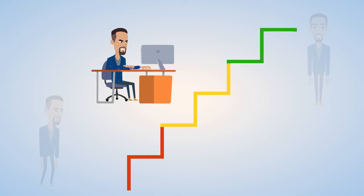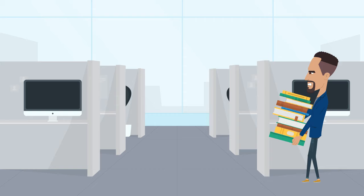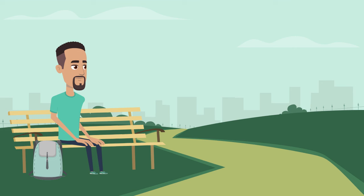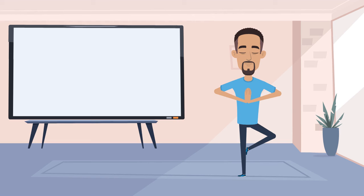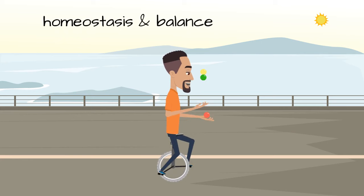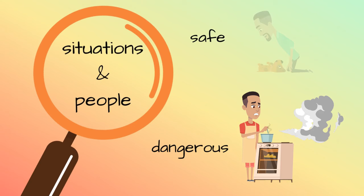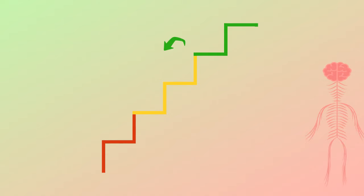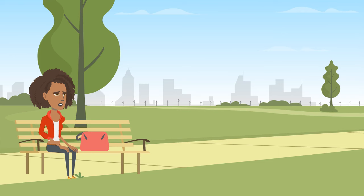Throughout the day we move between the different states, up and down the ladder, depending on what we are doing. When we are in a stressful situation and overwhelmed, we are likely to go into the dorsal vagal state. When we are calm and feel safe, we go up the ladder into our ventral vagal state. Our nervous system has an inherent tendency towards homeostasis and balance, so the state we are in helps us navigate and cope with whatever we are going through. We involuntarily scan situations and people to determine if they are safe or dangerous, and we move up or down the polyvagal ladder depending on whether our nervous system detects cues of safety or cues of danger.